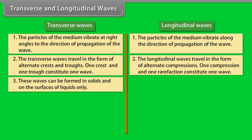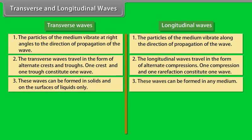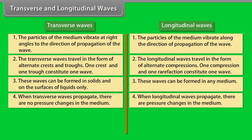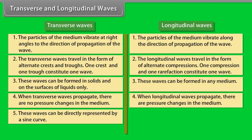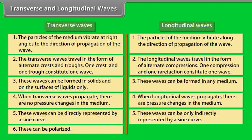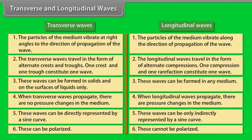Number 3: transverse waves can be formed in solids and on the surface of liquids only, whereas longitudinal waves can be formed in any medium. Number 4: when transverse waves propagate there are no pressure changes in the medium, but when longitudinal waves propagate there are pressure changes. Number 5: transverse waves can be directly represented by a sine curve, whereas longitudinal waves can only be indirectly represented by a sine curve. Number 6: transverse waves can be polarized, whereas longitudinal waves cannot be polarized.